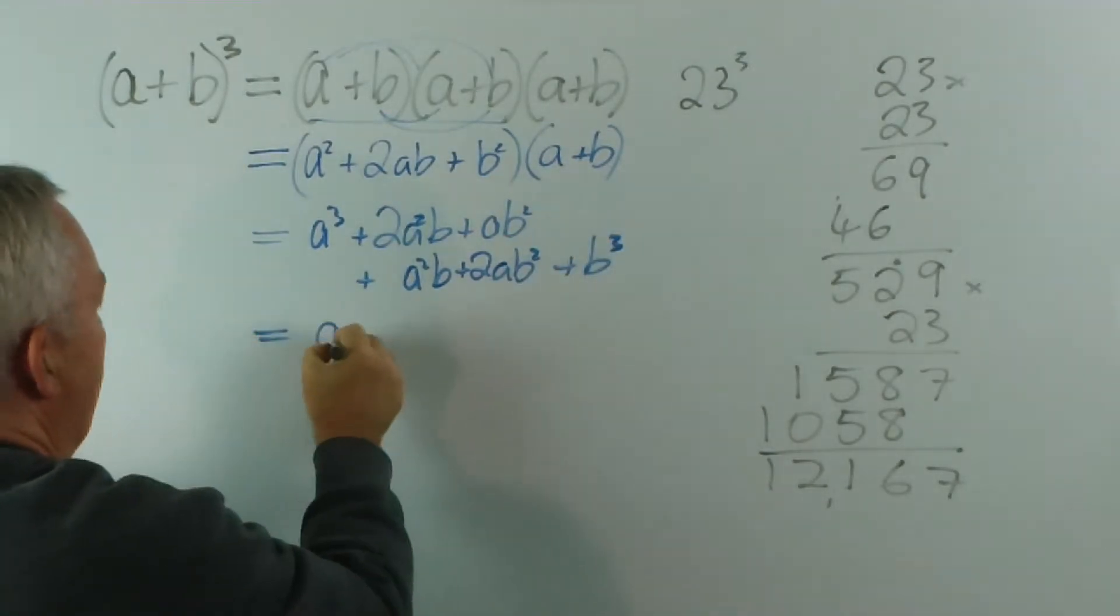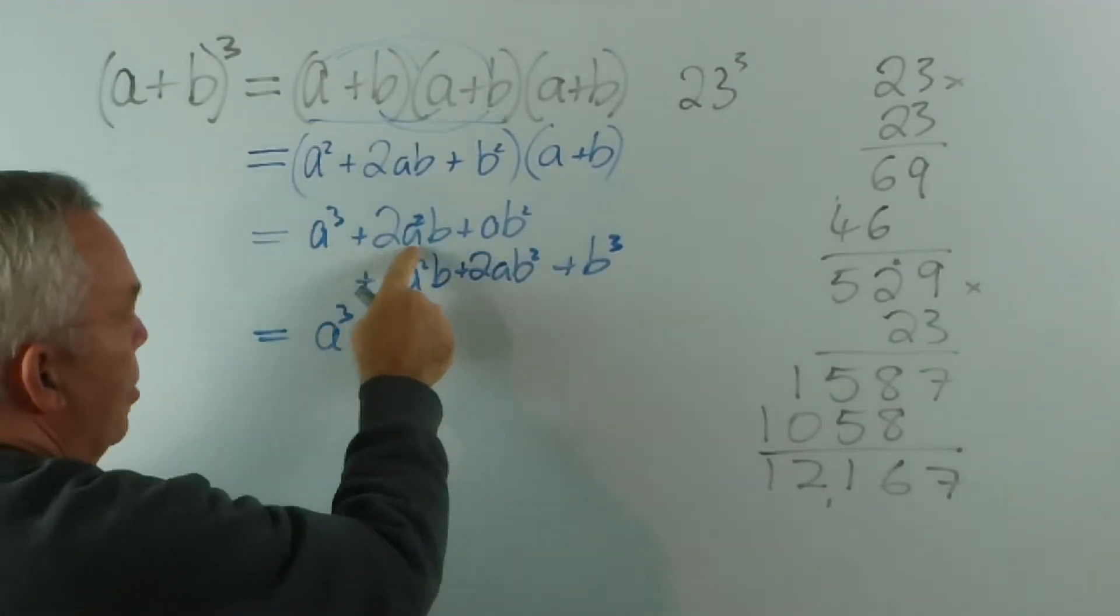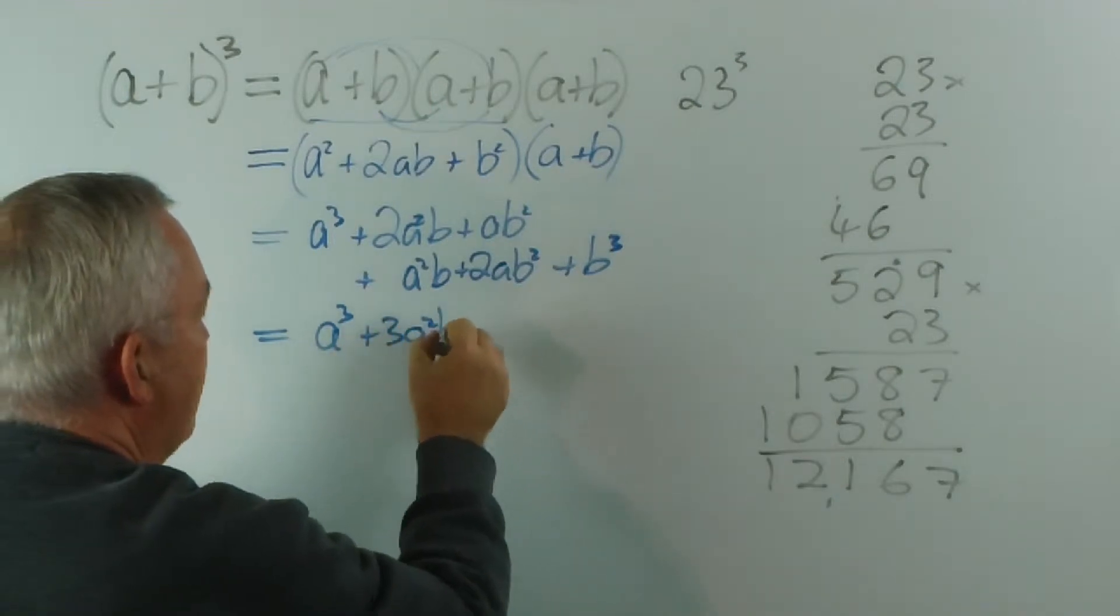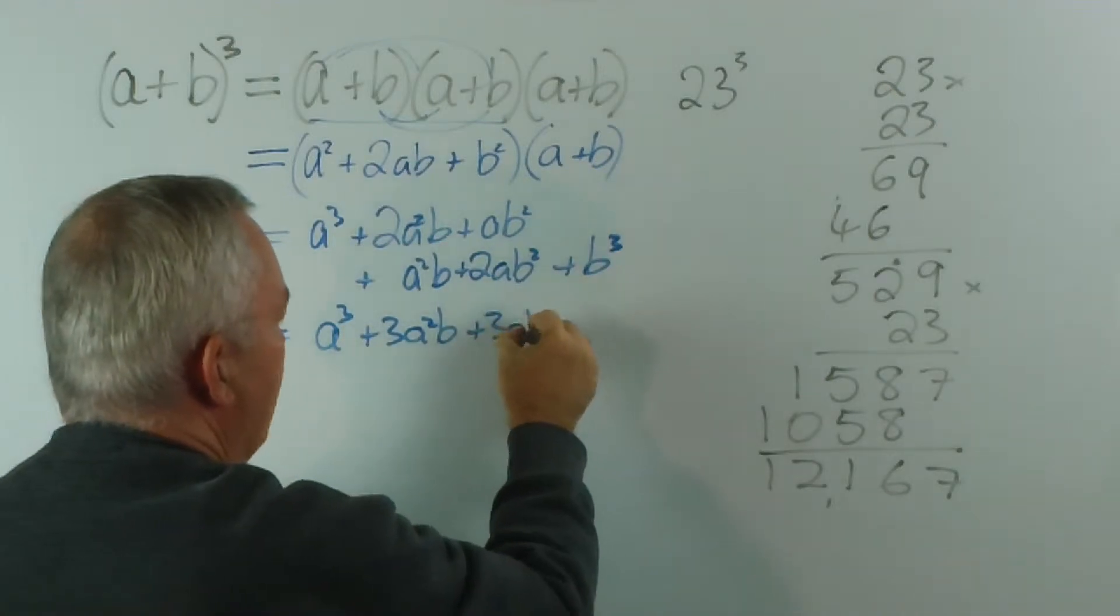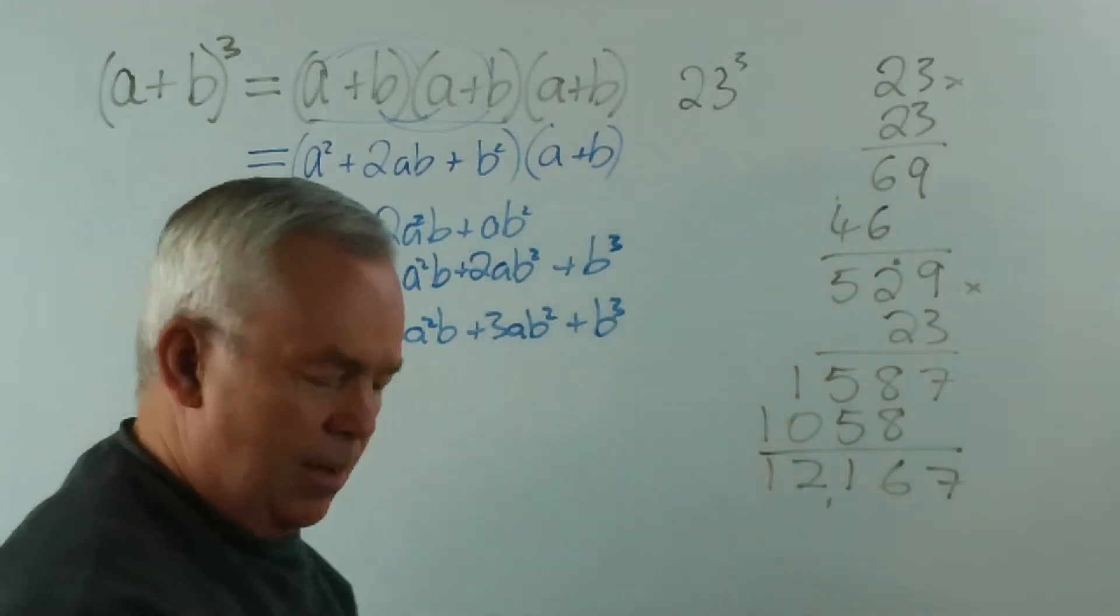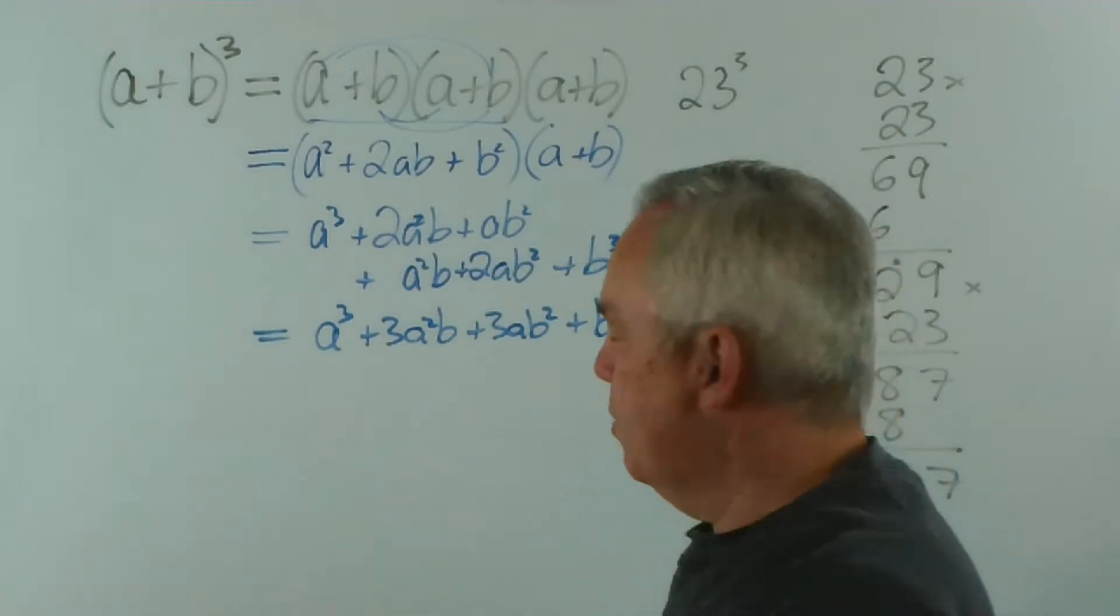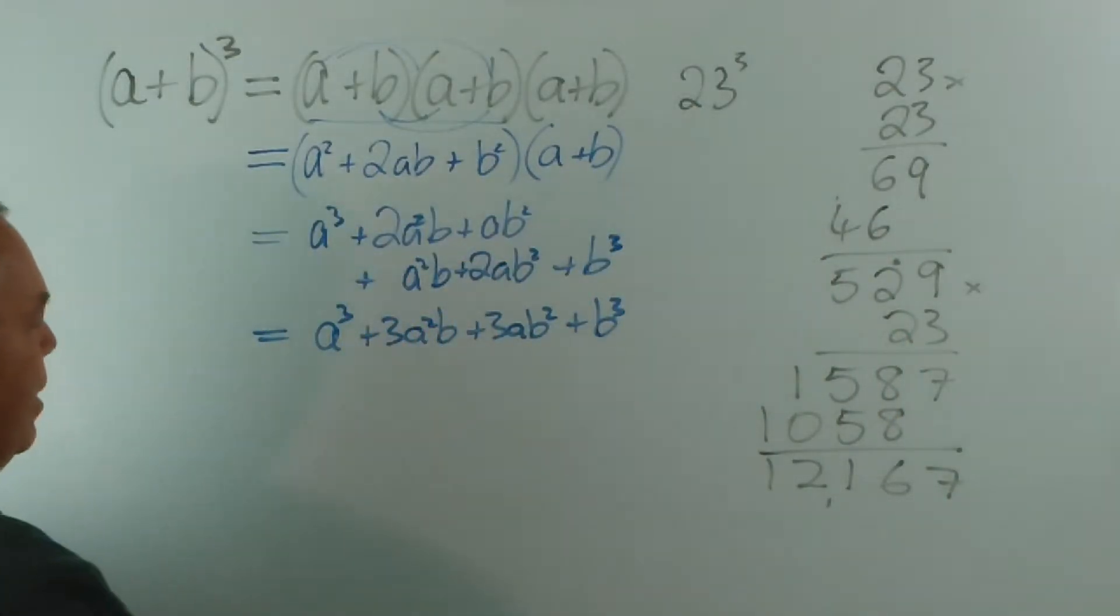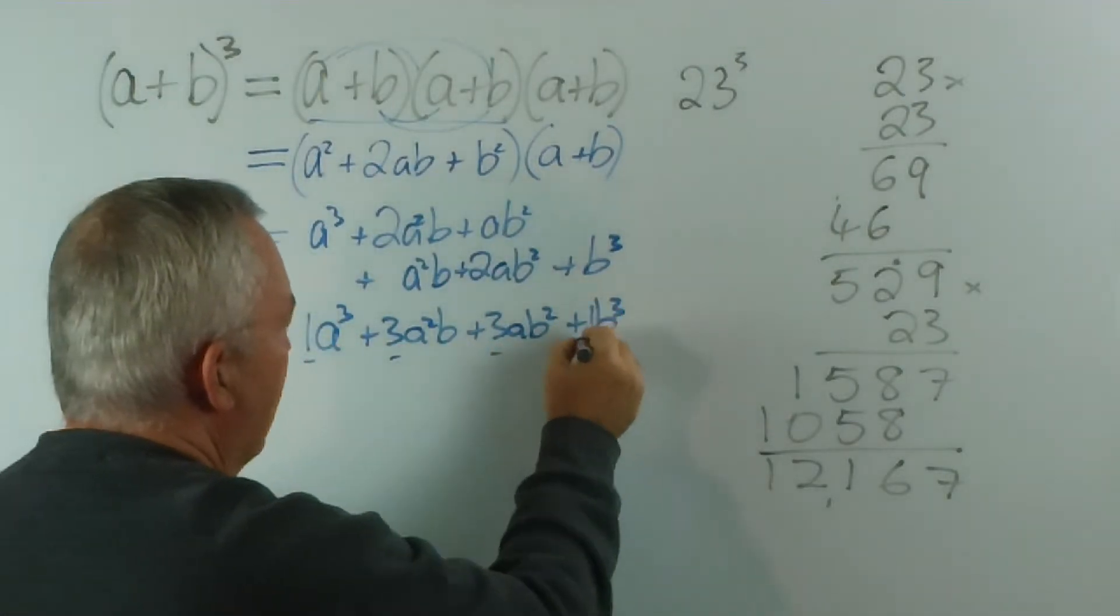And you can see that we get a cubed. I've lined these up because these are the like terms. 2a squared b and a squared b is 3a squared b. And ab squared plus 2ab squared is another 3ab squared plus b cubed. Now, you might be wondering how this can possibly be simpler. But bear with me. First thing I want you to notice here is that the coefficients are 1, 3, 3 and 1.